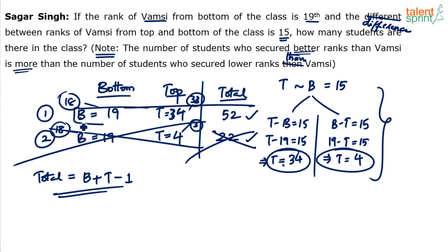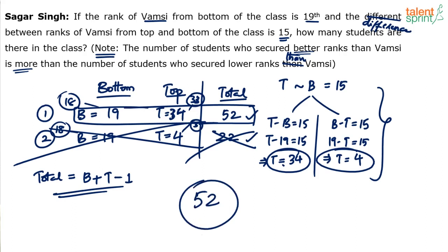So the correct answer is 52. Vamshi's rank from bottom is 19 and from top is 34, giving 33 people with better ranks and 18 with lower ranks. 33 is more than 18, satisfying the condition. Total = 34 + 19 − 1 = 52. When solving yourself, many steps can be done mentally — just identify the two possible top ranks and check which satisfies the given condition.